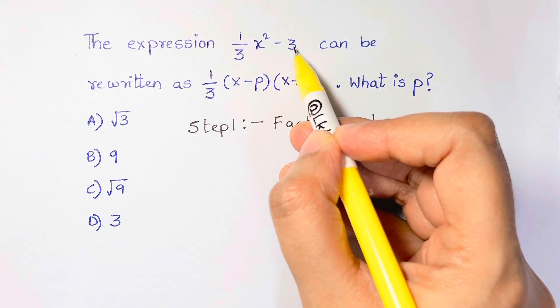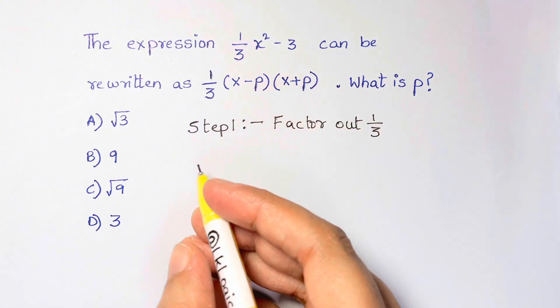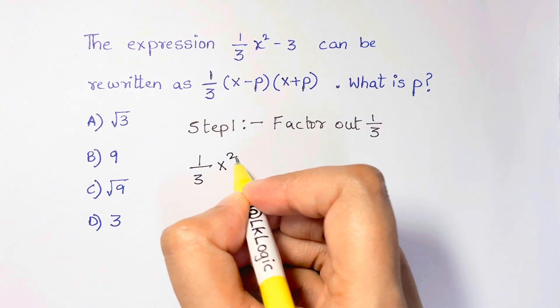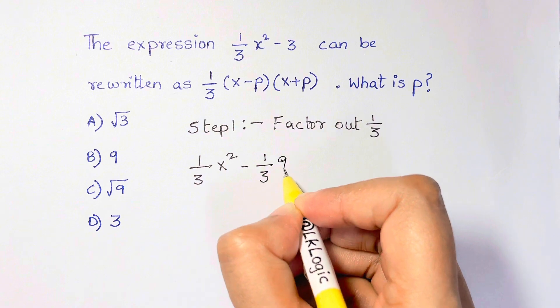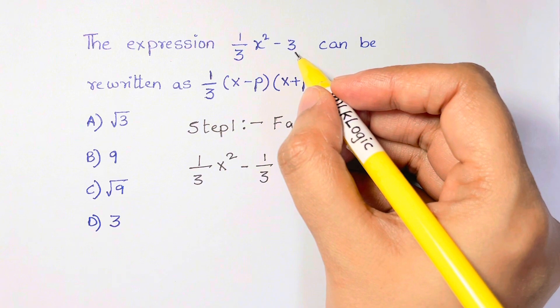Here's what I mean. We're going to say 1/3 x² minus 1/3 times 9, and 1/3 times 9 is the same thing as negative 3.